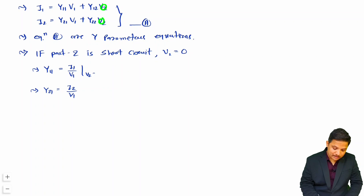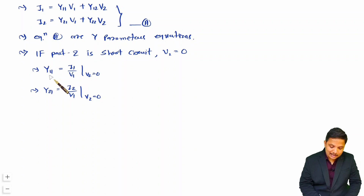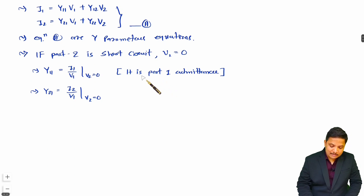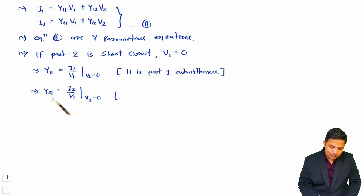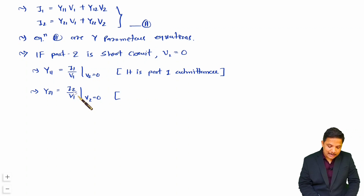With V2 = 0, port 2 is short circuited. Y11 = I1/V1 is the port 1 admittance, also referred to as input admittance. Y21 = I2/V1 is the forward transfer admittance — the reason being that output I2 is divided by input V1, so it is a forward (2 by 1) transfer admittance.